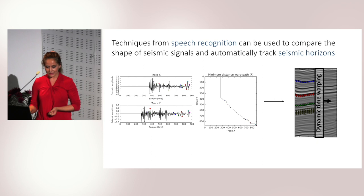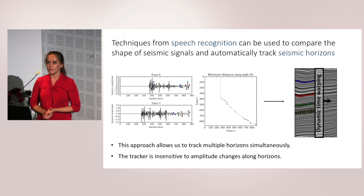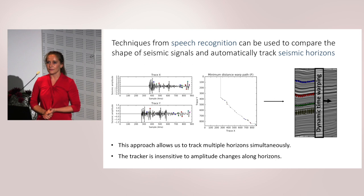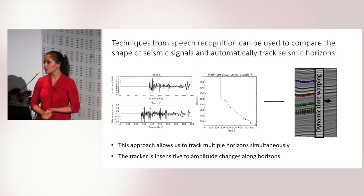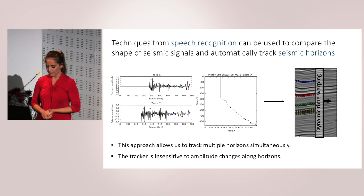Using dynamic time warping for two seismic signals, you get the minimum distance warp path, which is a point-by-point matching of all the reflective events in those two seismic signals. We can then use this warp path to track seismic horizons. You can track as many horizons as you want at the same time — for example, the 10 strongest reflectors or one reflector for every 20th sample. The user chooses, but you should pick a distinct peak or trough to get good results.